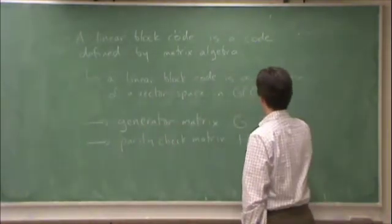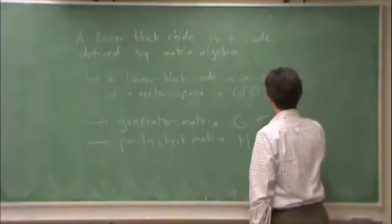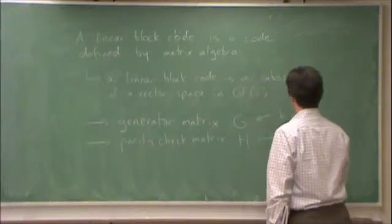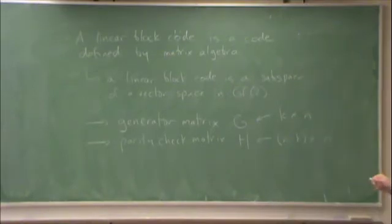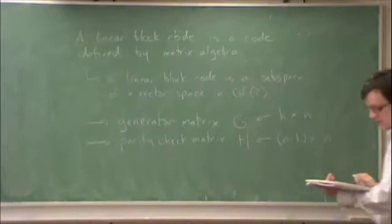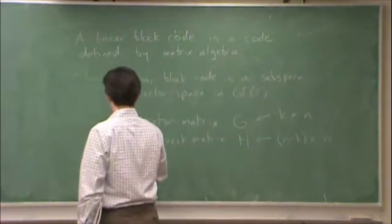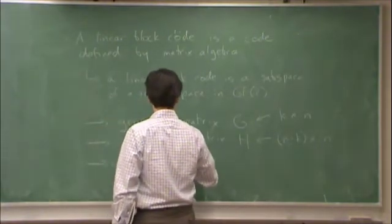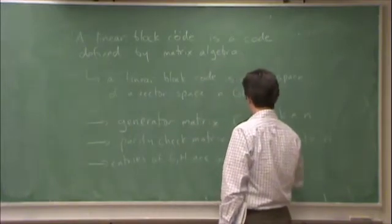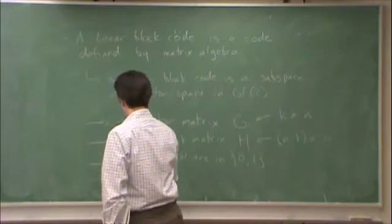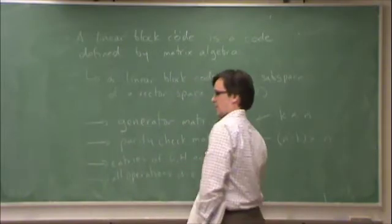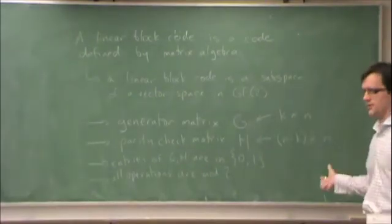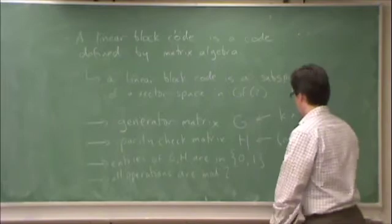G in an n k code, G has k rows and n columns, and H has n minus k rows and n columns. The entries of G and H are in 0 and 1, and all operations are mod 2. In other words, these matrices are described over GF2 and all the operations involving them are described over GF2.